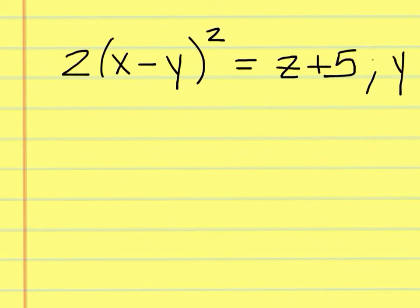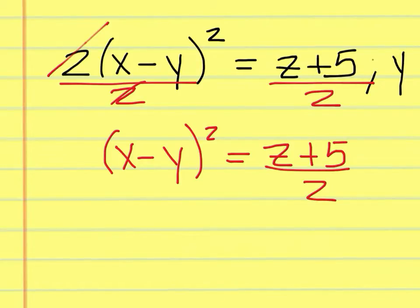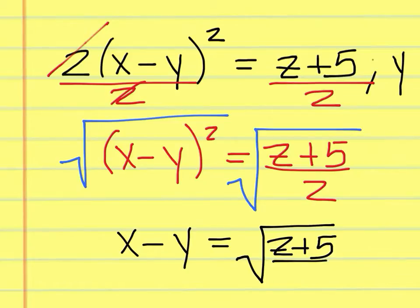We're looking for y, and to get access to that y inside the parentheses — this quantity squared — we must divide both sides by 2 first, so that we can cancel this out and be left with the quantity squared of x minus y. On the right, z plus 5 over 2. Now that the 2 is gone, we can start working on the parentheses, that quantity squared. We can find the square root of both sides. Notice how the square root symbol is tall enough to cover the entire left-hand side, top to bottom, of z plus 5 over 2 — you don't just put it on the numerator. On the left, you're left with x minus y; on the right, the square root of z plus 5 over 2.